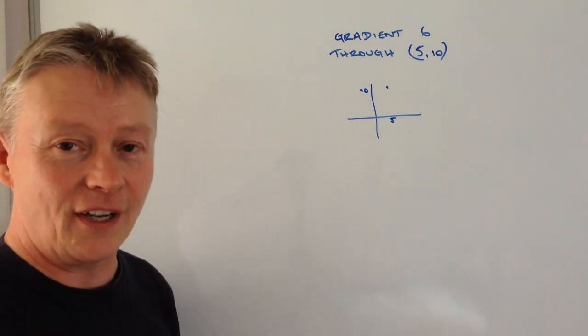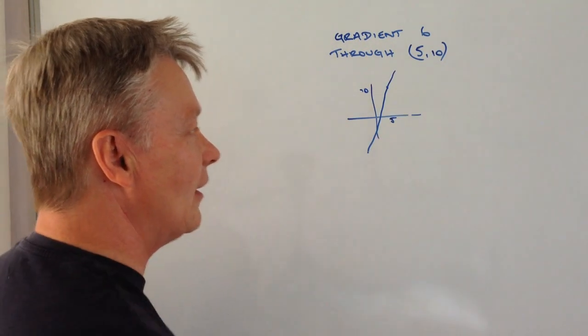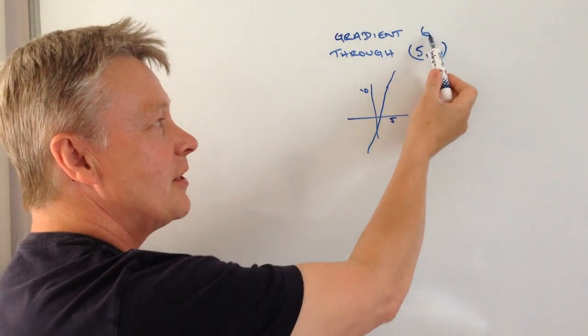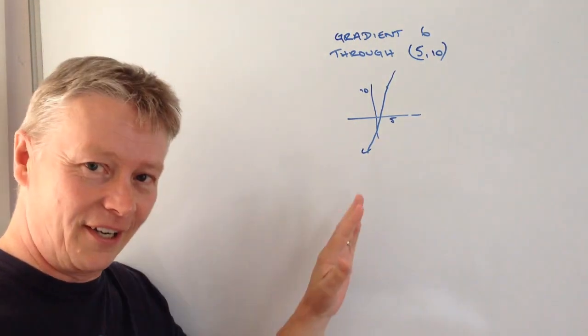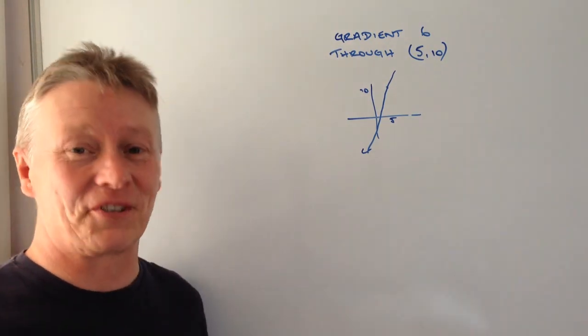And we don't know anything about the line other than it's a straight line. Okay, we know it's positive because it's a positive value of the gradient so it's actually going a bit like a tick, it's going in kind of that direction. I'm sorry my line is a bit wobbly but you get the idea it's a straight line.